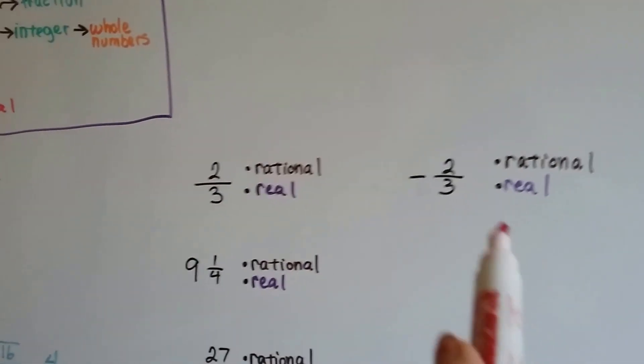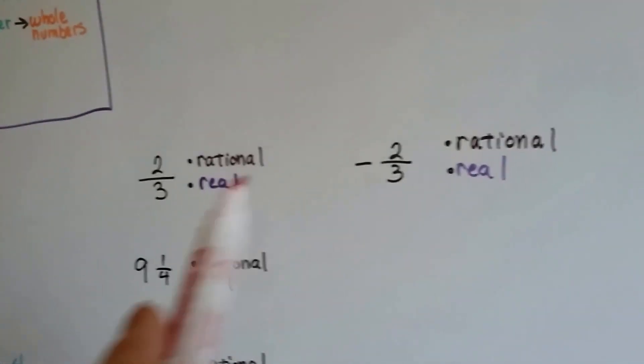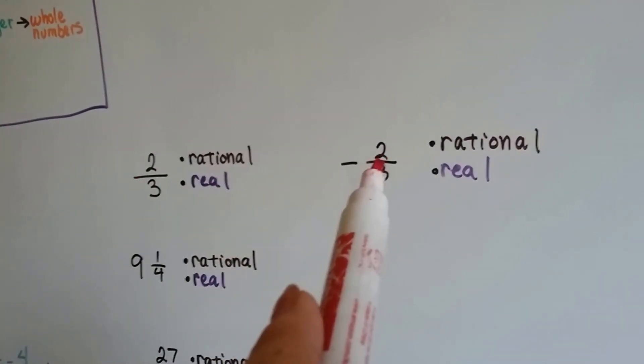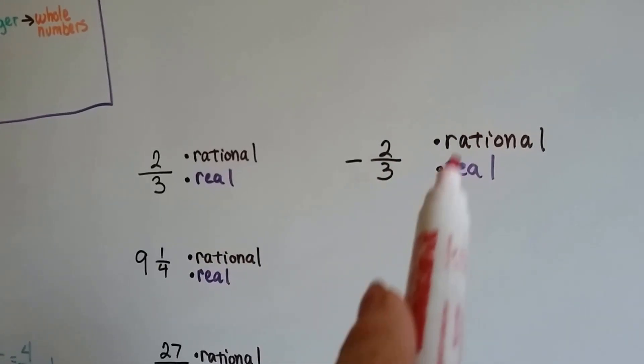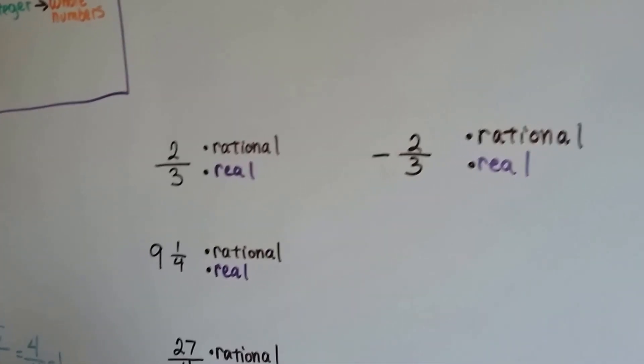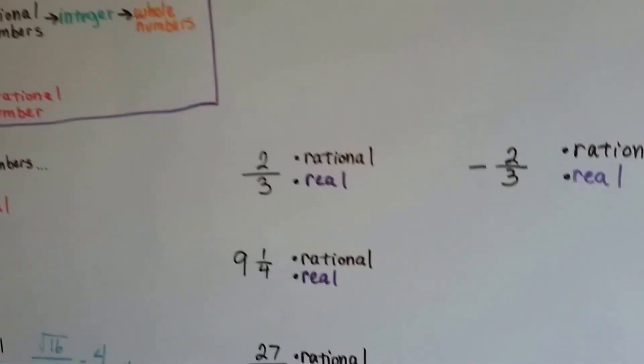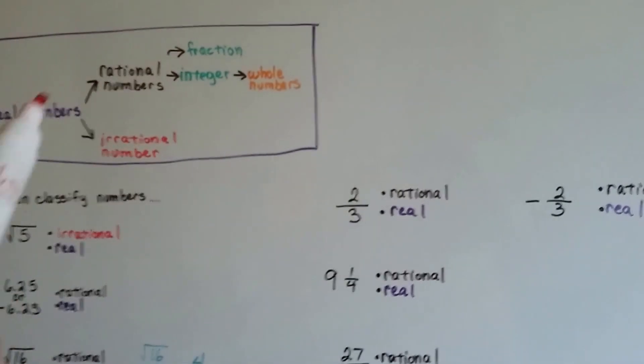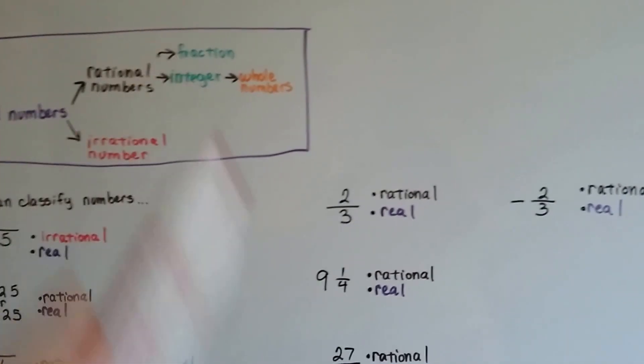What about negative 2 thirds? Well, positive 2 thirds and negative 2 thirds. Those are both rational, real numbers and their fractions. See? They're not whole numbers and they're not integers. They're just real numbers, rational numbers and fractions.